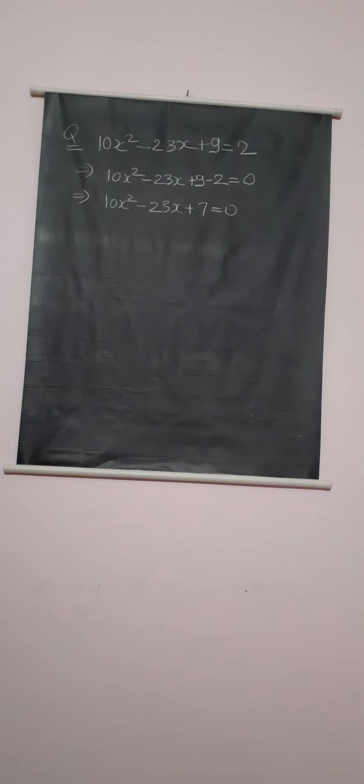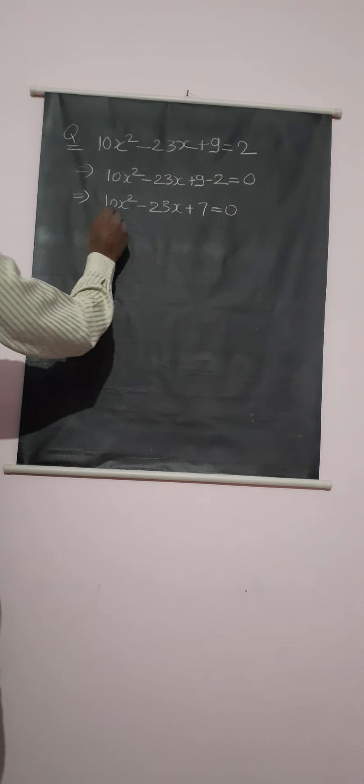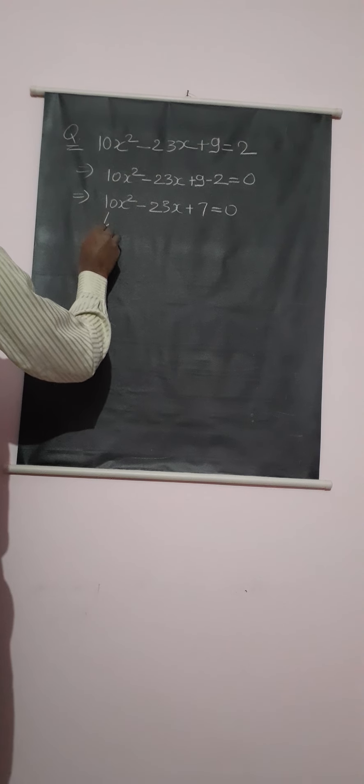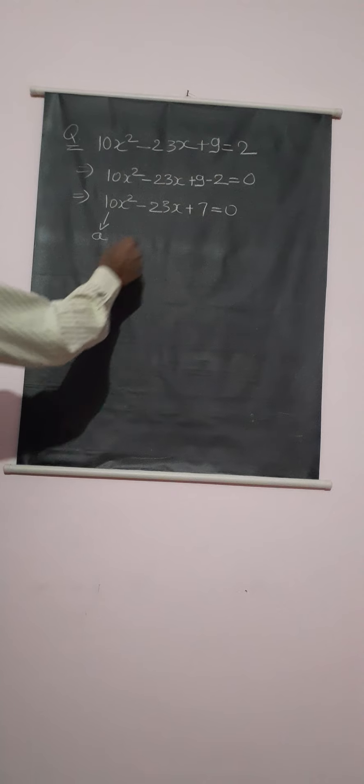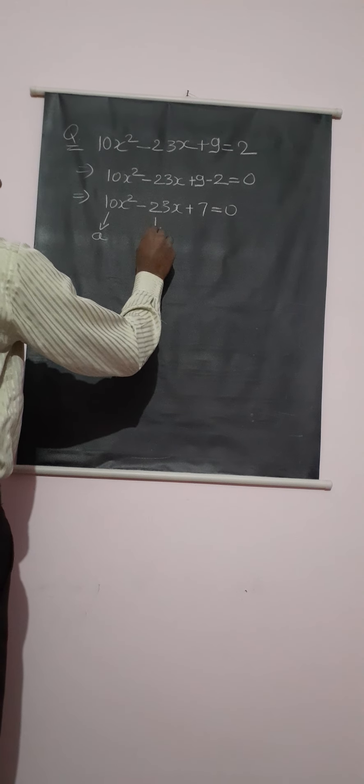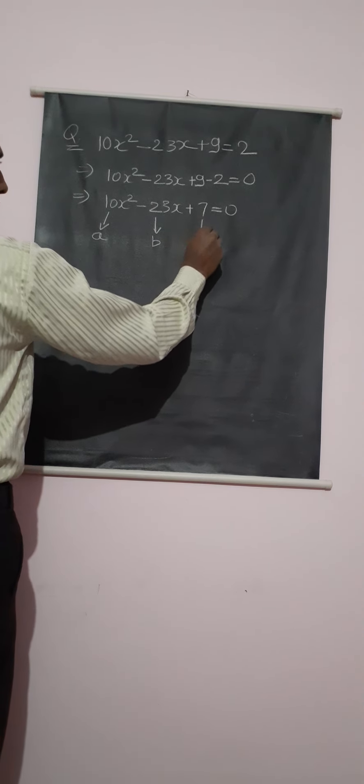Now, how to solve this? Here, it is a. We can say this constant is a, this is b, and this constant is c.